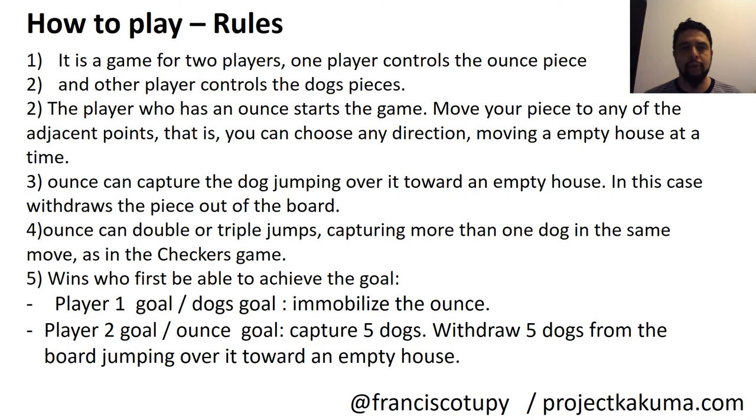Here we have the rules. I made the first part, the rules in direct text. And after that, the rules with examples. The first rule, two people. This game is designed for two players. One player will control the ounce and other player will control the 14 dogs. Always, always, always, the ounce will start the game. If I am playing with my friend, if my friend is controlling the ounce, he will start. But if in another time I start playing with the ounce, I will start.